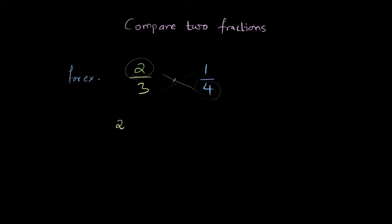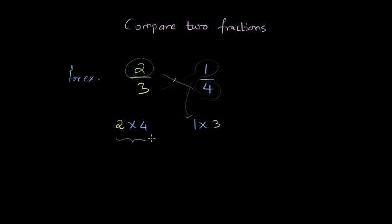We multiply 2 with 4, and we write this multiplication below the first fraction because that's where we got the numerator. We write the other multiplication, 1 times 3, below the other fraction because that's where we got its numerator. Completing the multiplication: 2 times 4 is 8, and 1 times 3 is 3. Since the left-hand multiplication is greater, 2/3 is greater than 1/4.